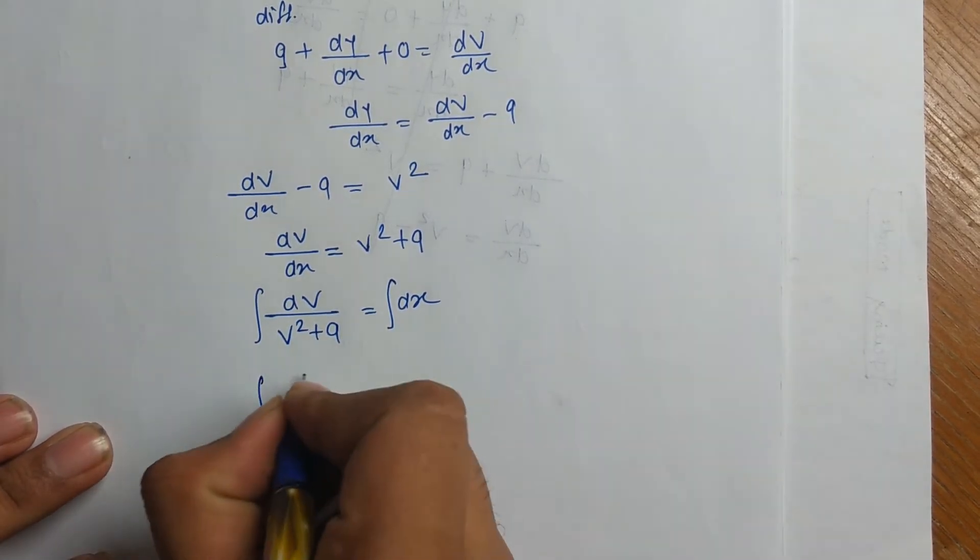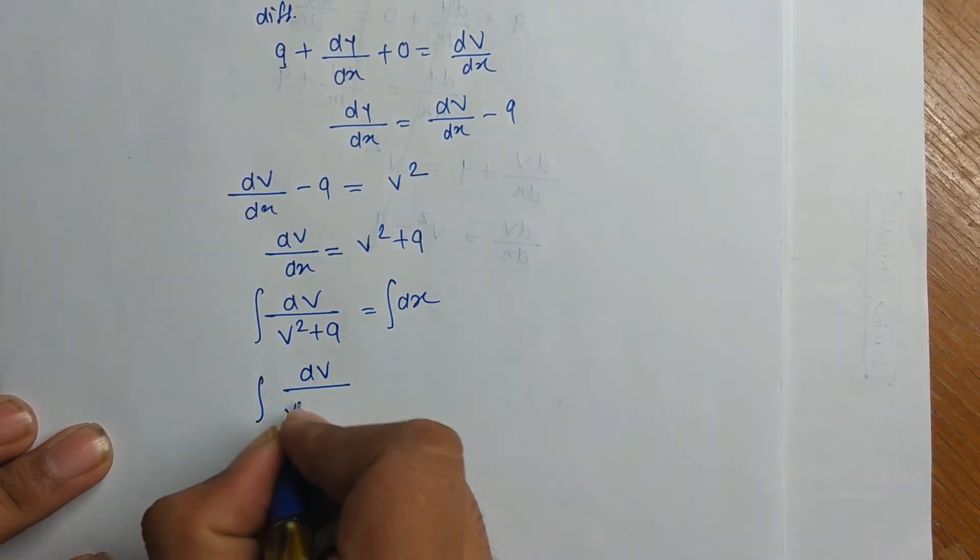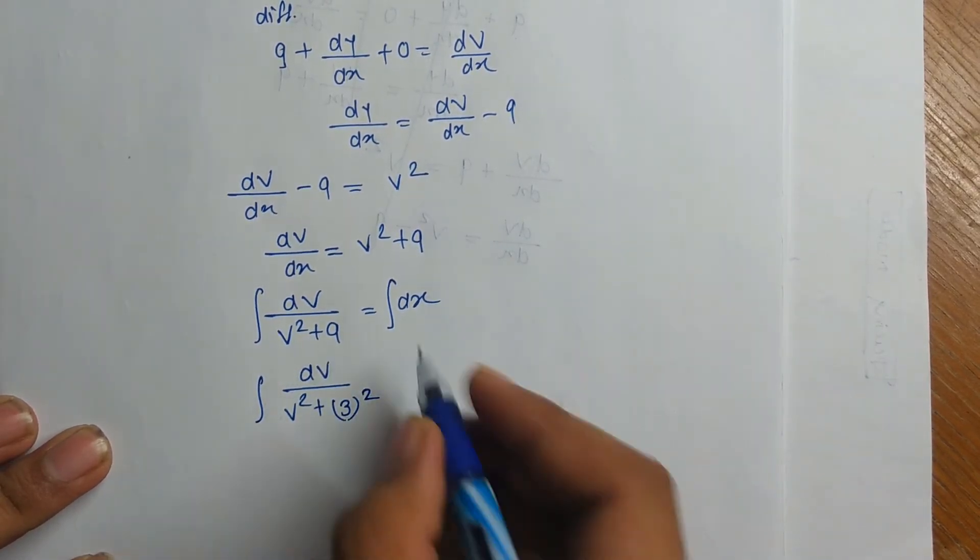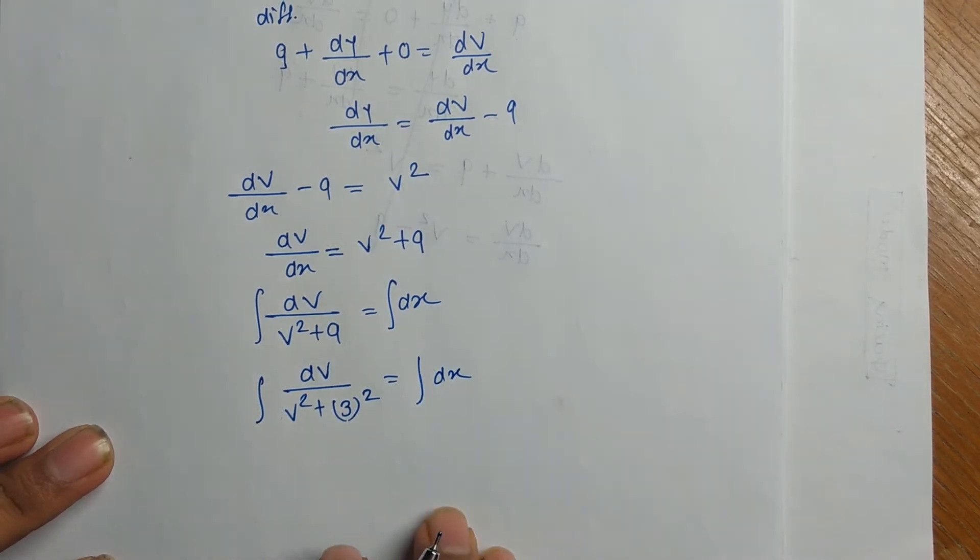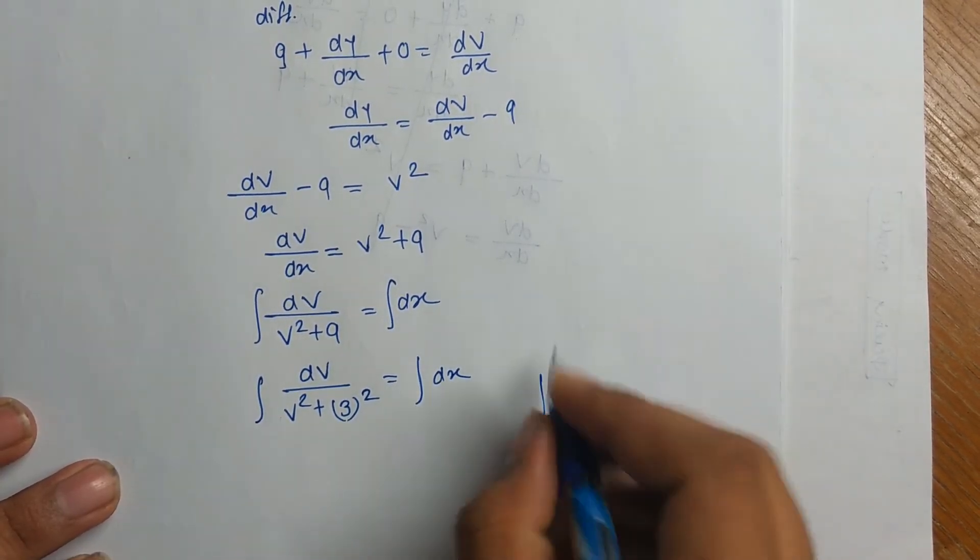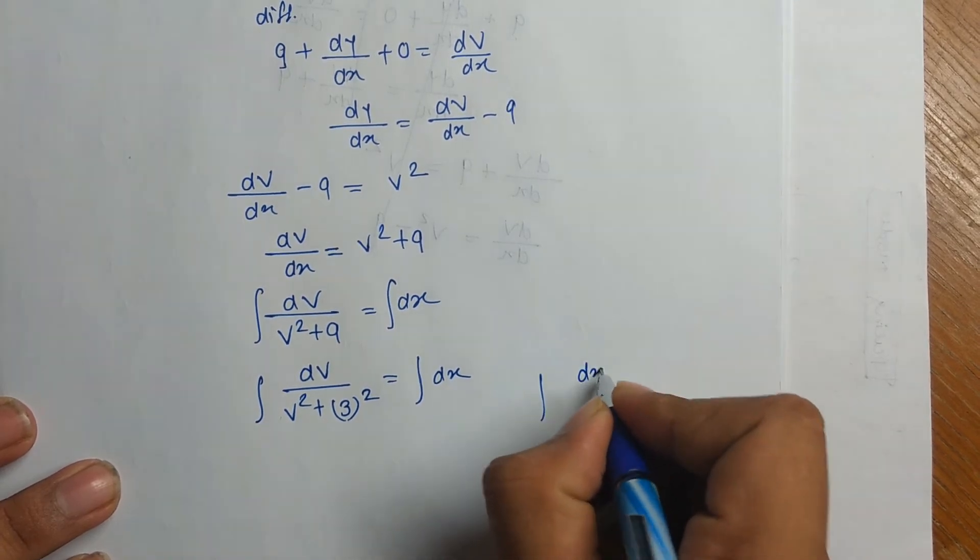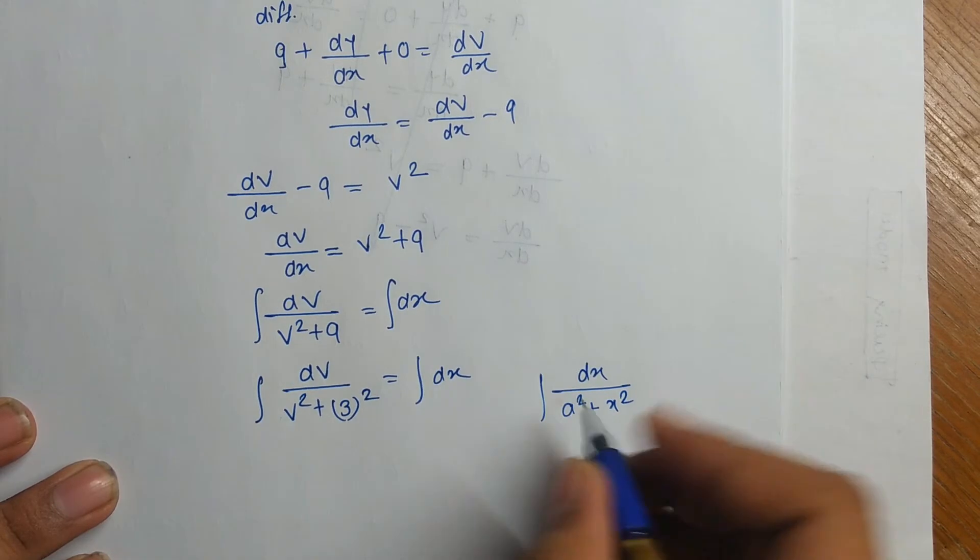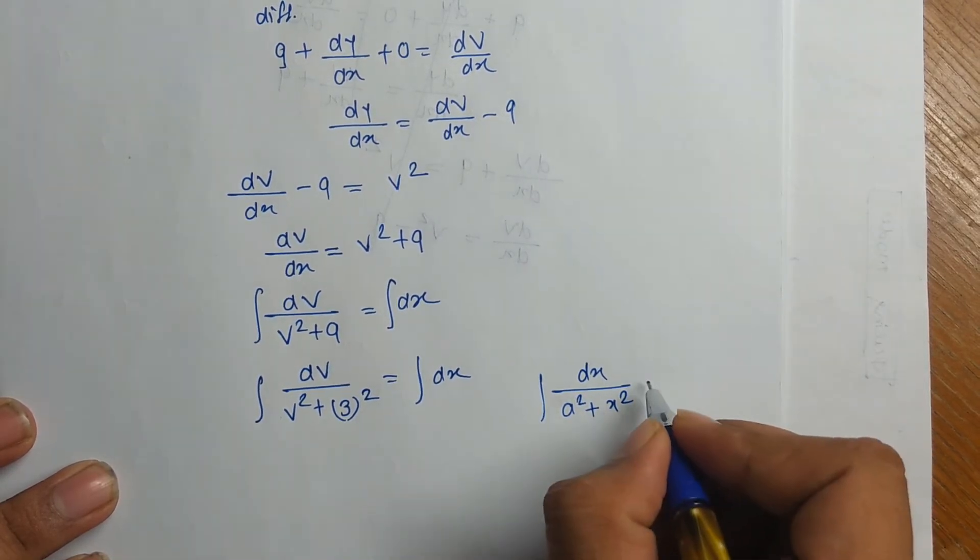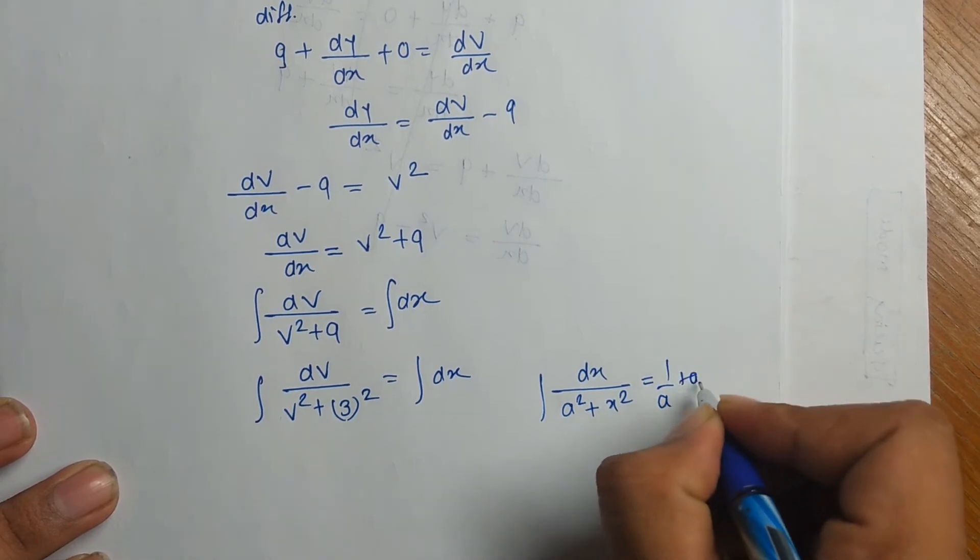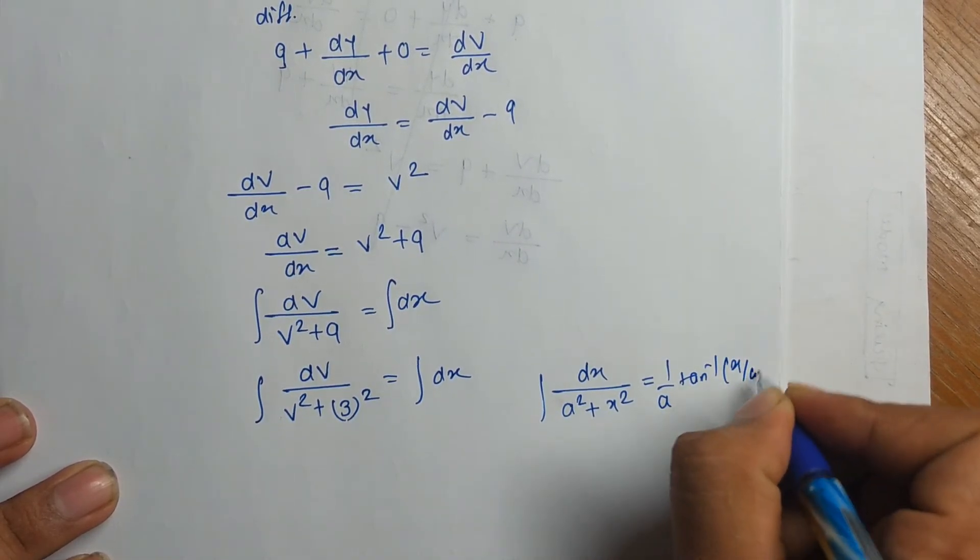That gives us integration of dv by v square plus 3 square. 9 is the 3 square equal to integration of dx. When you find such term that is integration of dx upon a square plus x square or x square plus a square, your integration will be 1 by a tan inverse of x by a plus c.